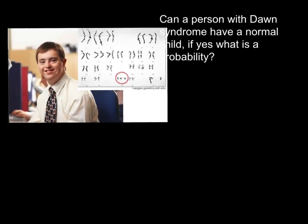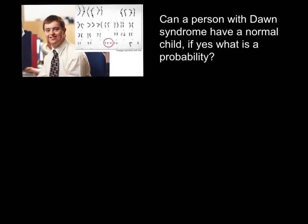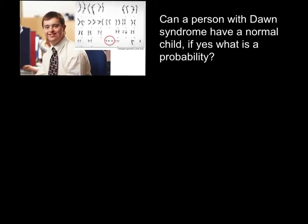Now I want to show how to solve this problem. You can stop the video here and try to solve on your own this problem, and then compare your solution with my explanation. First of all, we have to find what is the probability for the person to have normal gametes.